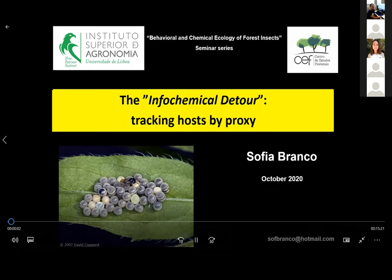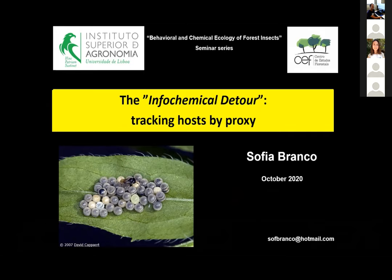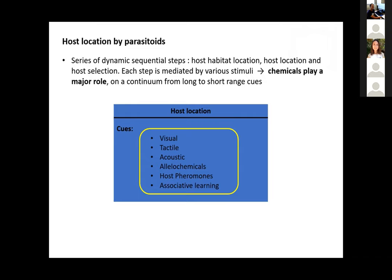Good afternoon, everyone. I would like to thank the organization for this webinar and Manuela for inviting me. Today we will be talking about host location by egg parasitoids. This presentation is divided into sections: I will first give a brief introduction on how egg parasitoids track their hosts, and then present a study conducted with Anaphes nitens, the egg parasitoid of the eucalyptus weevil Gonipterus. Parasitoids find their hosts by following a series of dynamic sequential steps: host habitat location, host location, and finally host selection and acceptance. Each step is mediated by a combination of different stimuli. Chemicals are known to play a major role, on a continuum from long to shorter range cues.